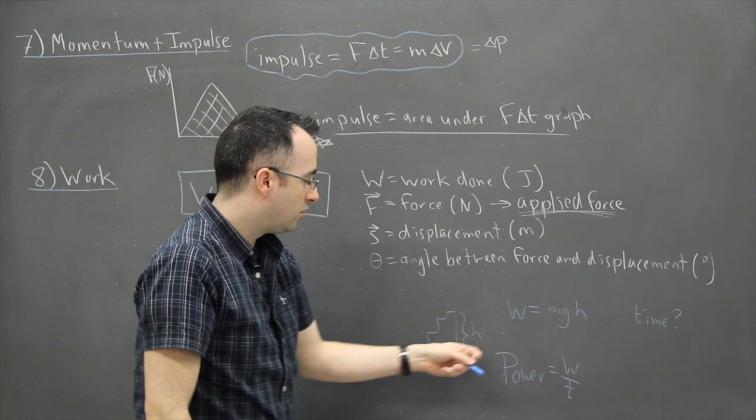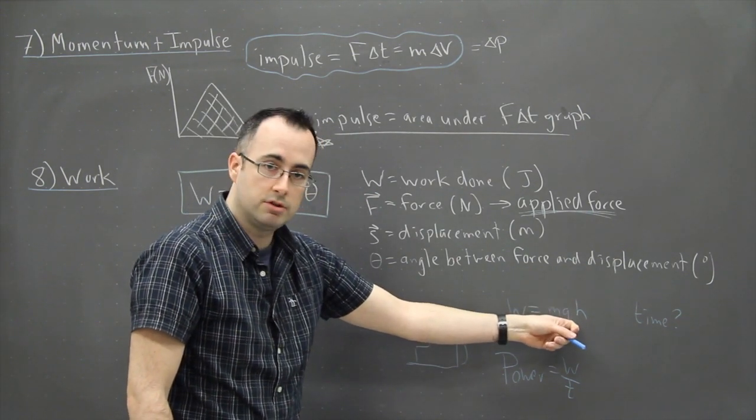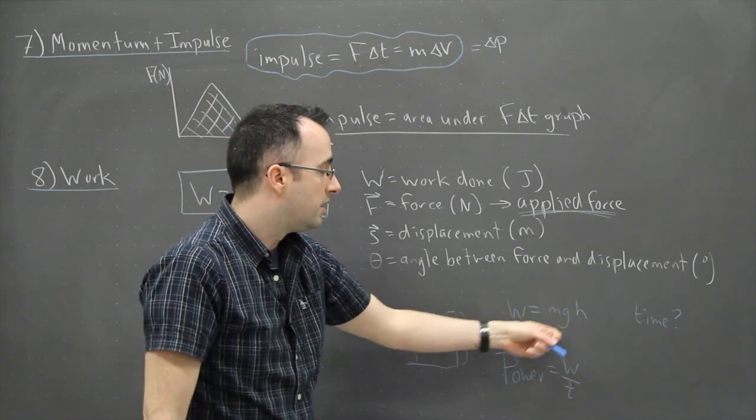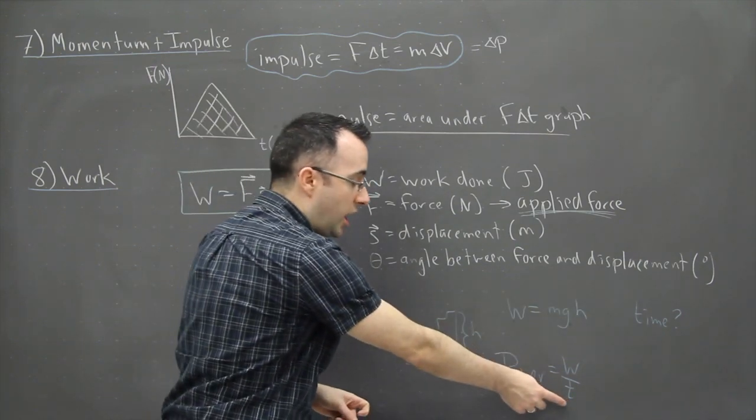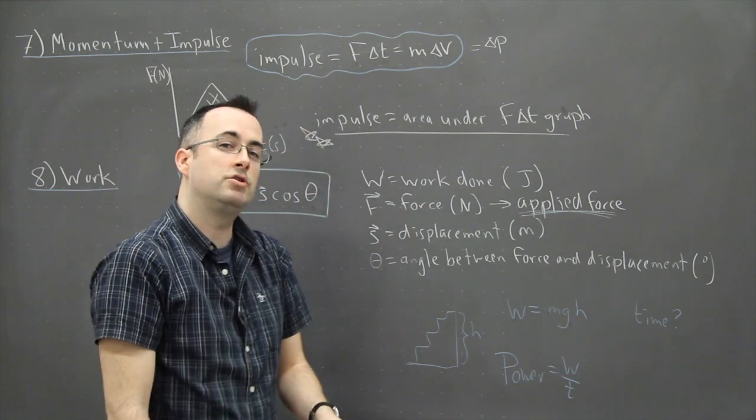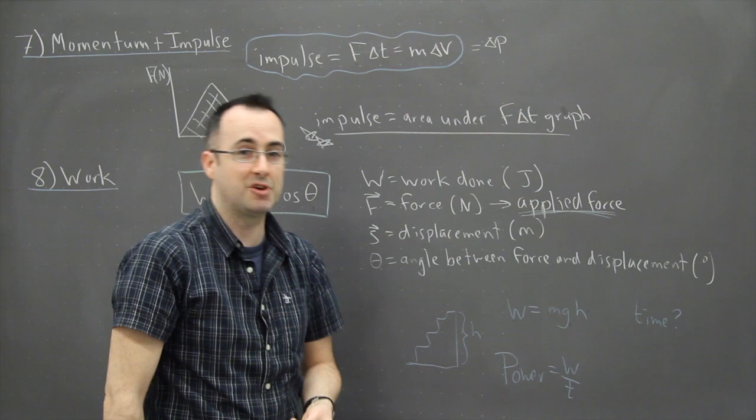If you use your own mass, multiply that by acceleration due to gravity, 9.81, multiply that by the height you've gone up, and divide that by the time it took you, that tells you your power in watts, and of course you can just convert that to horsepower.